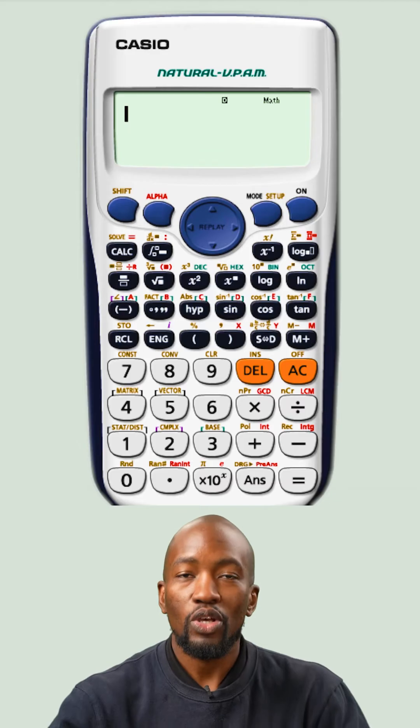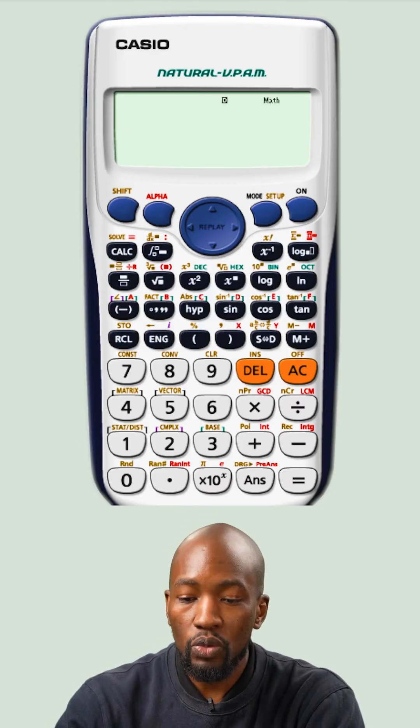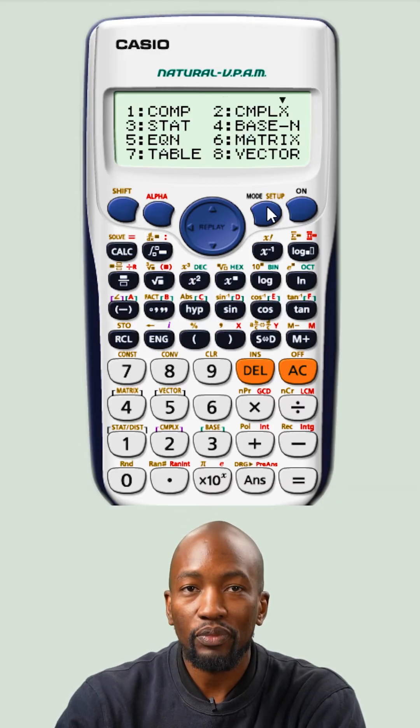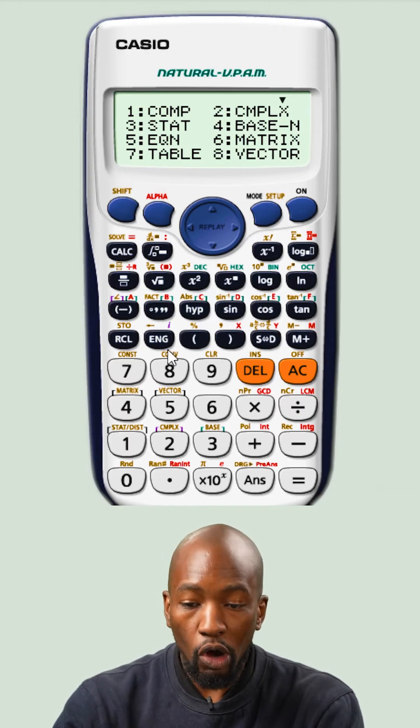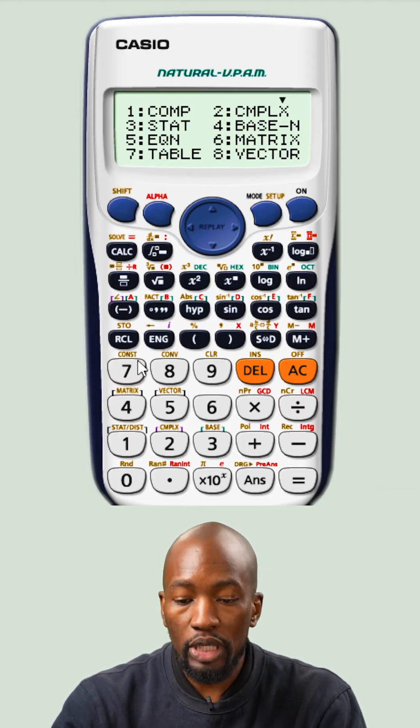On our calculators, what we're going to do is press mode. After pressing mode, what we're looking for is table, and on my calculator table is option 7.